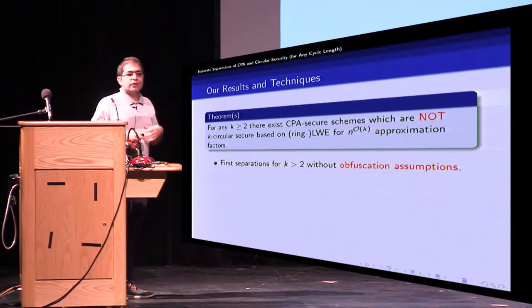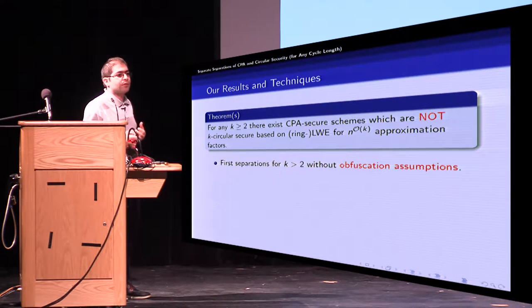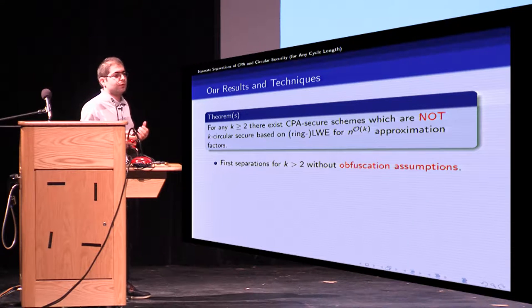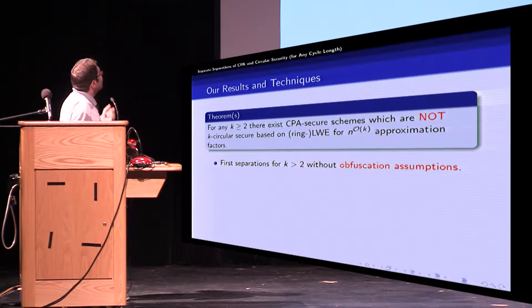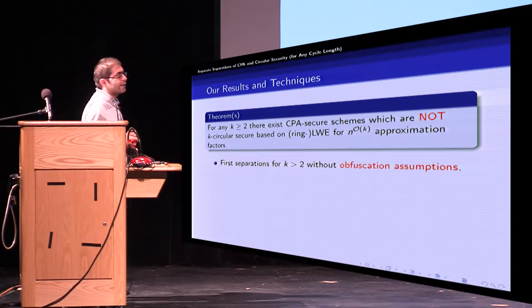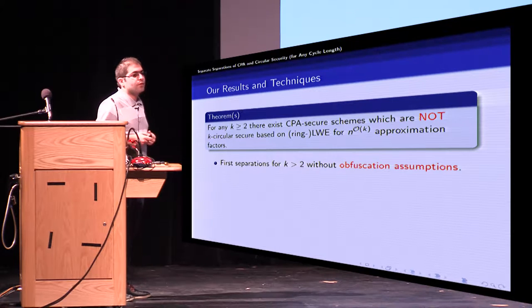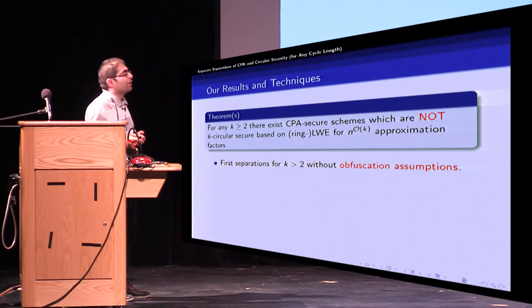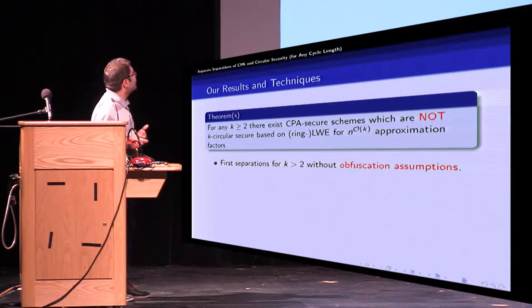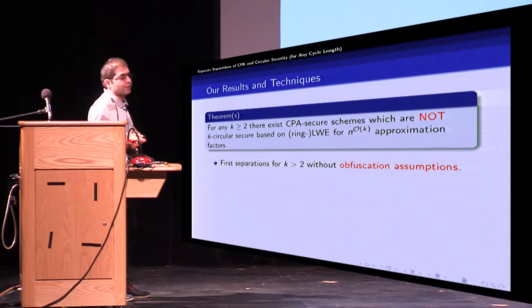The question is can we get rid of obfuscation assumption for the case K greater than two? And here is the main theorem which asserts that for any K greater than one there exists CPA security schemes which are not K-circular secure based on learning with errors and its ring variant for n to the K approximation factors.